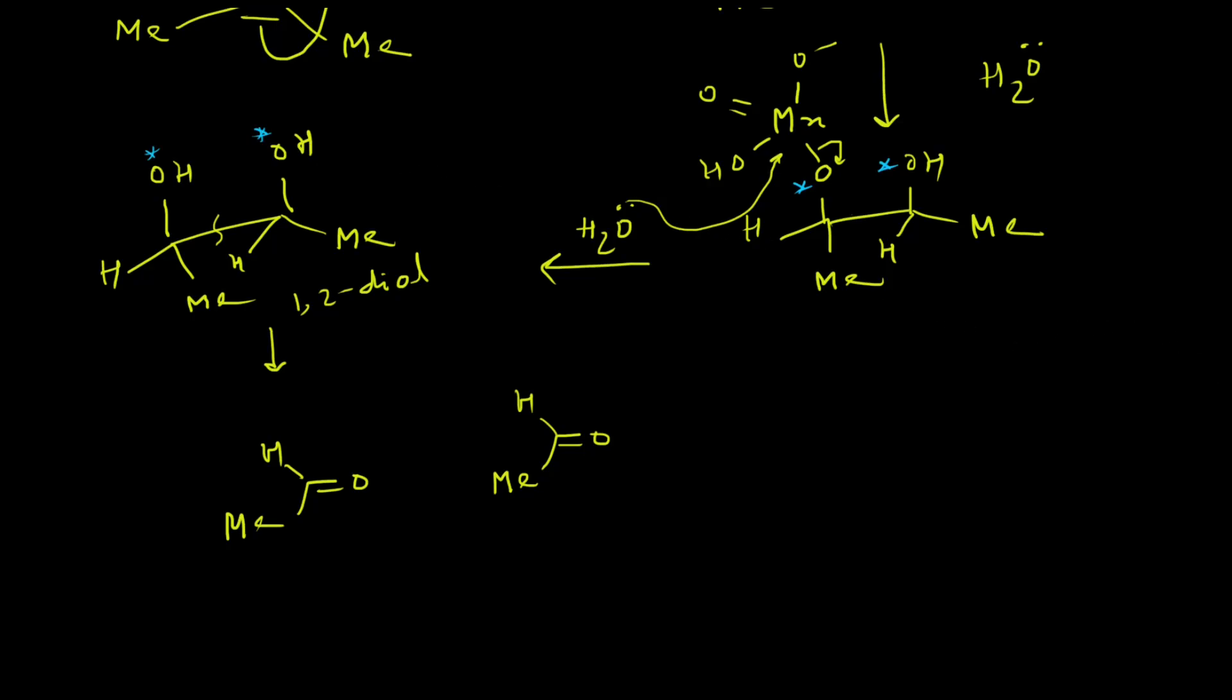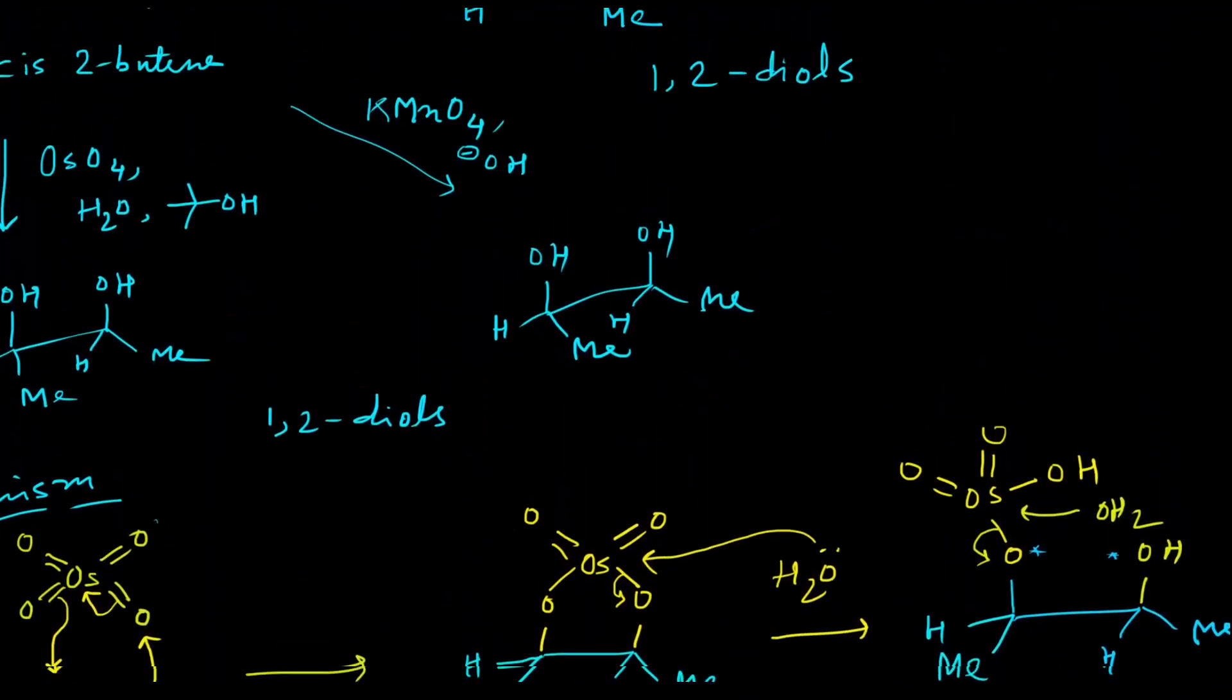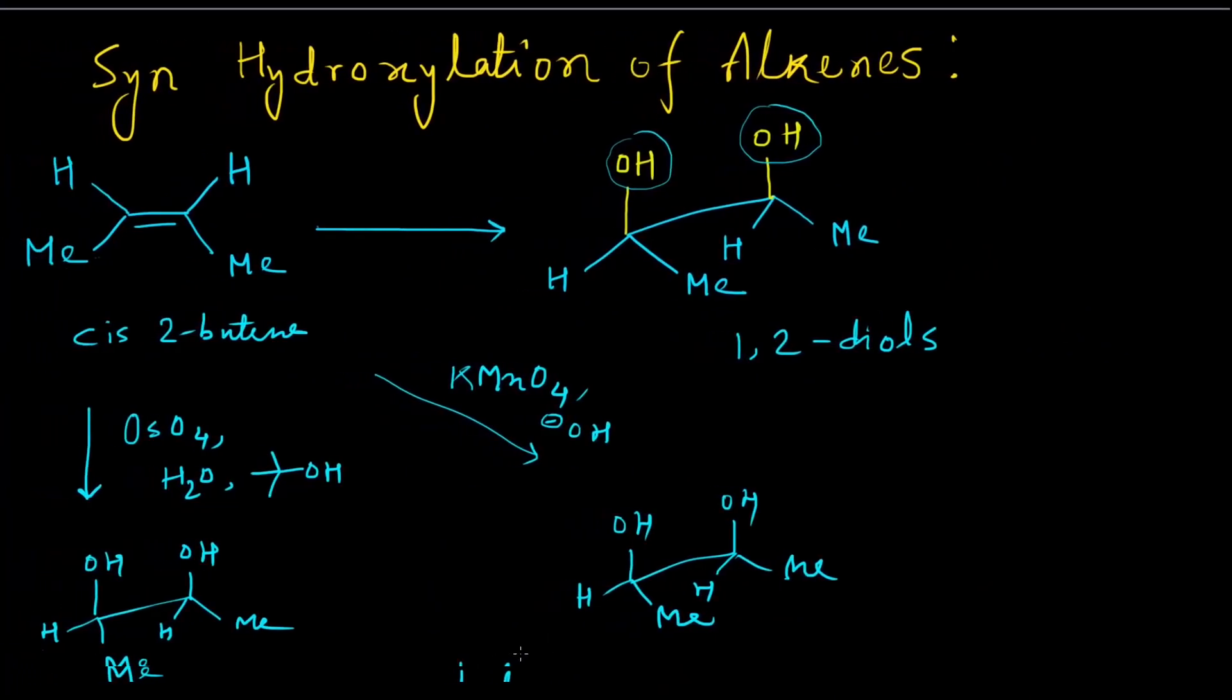It verifies that the oxygen atoms are coming from our oxidizing agents which are osmium tetroxide and potassium permanganate. This is the mechanism of the syn hydroxylation using osmium tetroxide and potassium permanganate. I hope you have liked this video. If this video is helpful towards you, then please subscribe to this channel. It will encourage me to produce more videos. Thank you for watching this video.